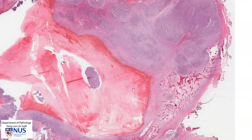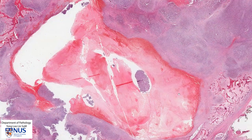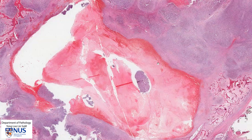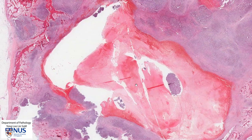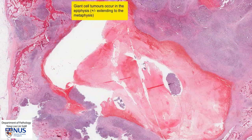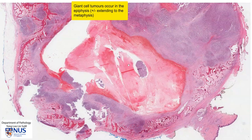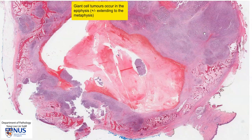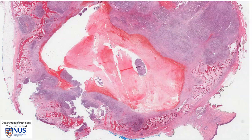Very often we actually see cystic change as well as hemorrhage as part of this tumor. Because these tumors occur right up in the epiphysis, very close to the joint surfaces, sometimes they can also extend to the metaphysis of long bones. Because of the location close to the articular surfaces, they may actually present clinically with arthritis-like symptoms, and they can also present with pain and sometimes pathological fracture.